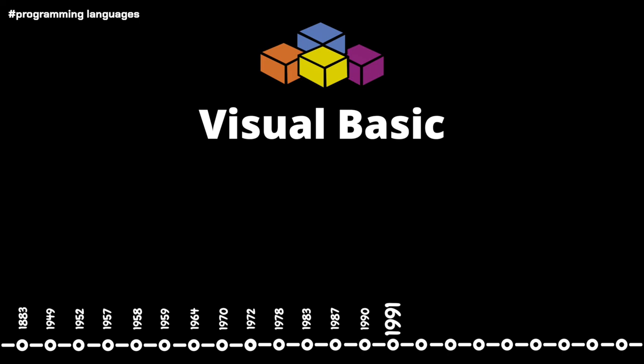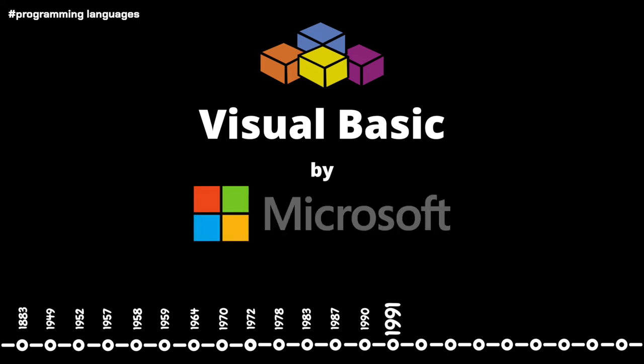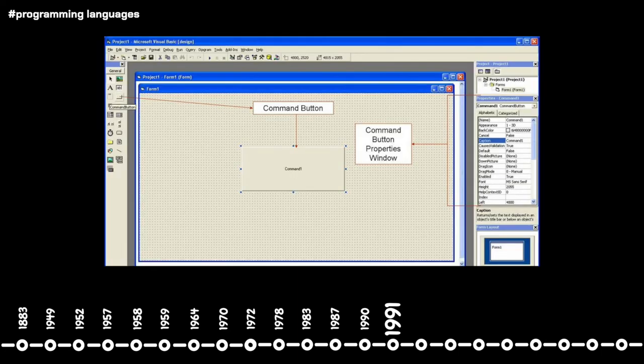Also in 1991, we see the emergence of Visual Basic, developed by Microsoft. Visual Basic's key feature allows users to drag and drop chunks of code in a graphical user interface. It was designed to be extremely easy to learn, and in 2016 Visual Basic 6.0 received the Technical Impact Award at the 19th Annual DICE Awards.